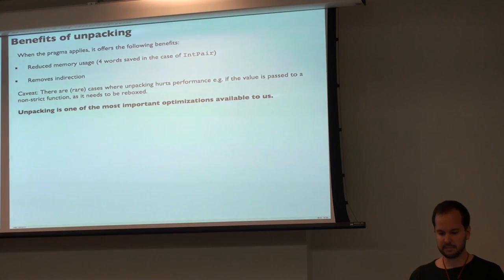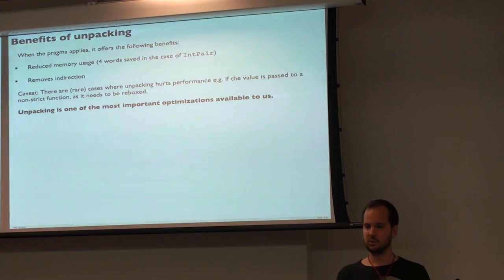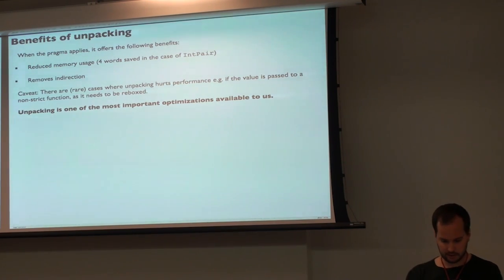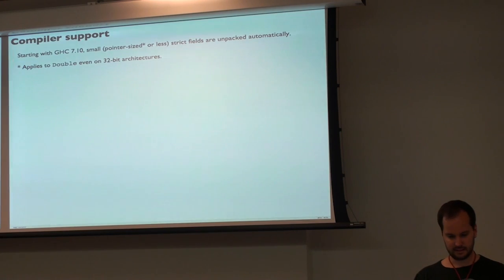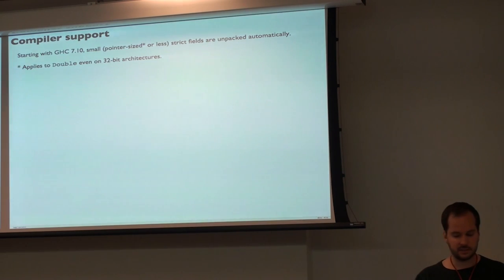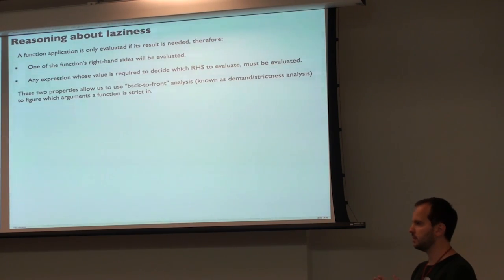There's some caveats: sometimes it's bad for performance, because if you have an IntPair with unpacked Ints and you need to pass that Int to a lazy function expecting a boxed thing, you might have to allocate a new box. But in theory, unpacking is very important — you control memory layout, and memory layout affects performance on modern CPUs through caching. So unpacking is very important. And to answer the question: yes, GHC 7.10 does this automatically for small fields, including doubles even if they're bigger than a pointer on a 32-bit machine.